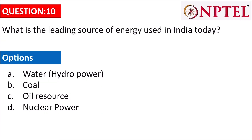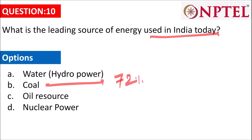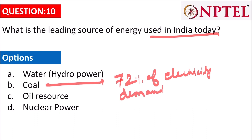The last question asks what is the leading source of energy used in India today. It is coal, because 72 percent of electricity demand is fulfilled by coal alone through coal thermal power plants. So the answer is B.